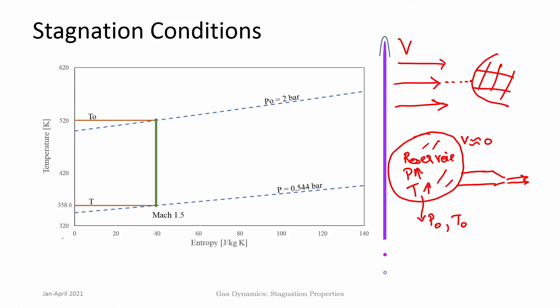As we go along and discuss problems like variable area ducts, nozzles, and diffusers, these concepts will occur again and again. It is important to understand the stagnation conditions, sonic conditions, their differences and their applications. To reemphasize: the stagnation process is achieved at any particular point in the flow — the flow is taken hypothetically from that given velocity, pressure, temperature condition to a condition where velocity is 0, and then we look at what happens to pressure and temperature.